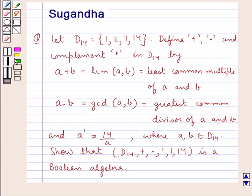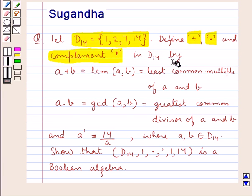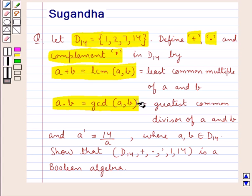Hello and welcome to the session. In this session we discuss the following question: let D14 be a set containing the elements 1, 2, 7 and 14. Define the operation of sum, product and complement in D14 by: a plus b is equal to LCM of a and b, a into b is the GCD of a and b, and a complement is equal to 14 upon a, where a and b are the elements of set D14.